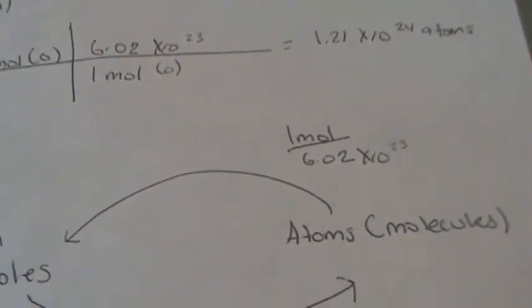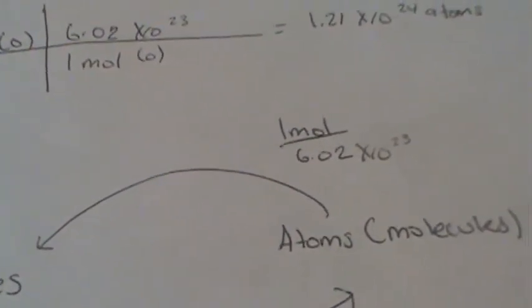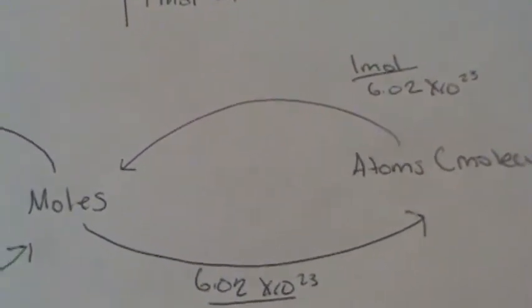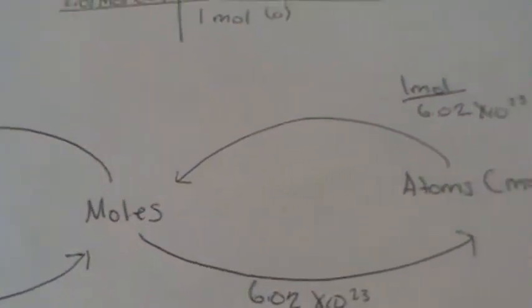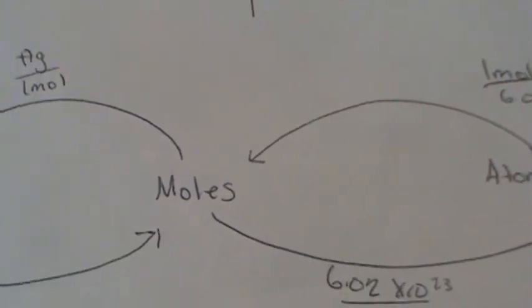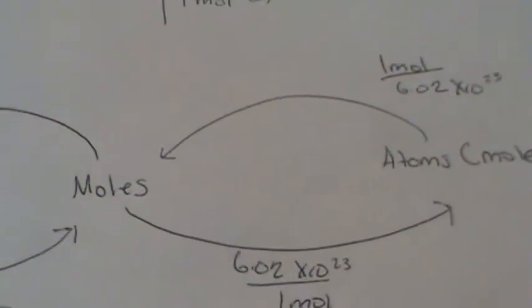And from atoms to moles, we put one mole over 6.02 times 10 to the 23rd, which is our Avogadro's number. We have to go from atoms to moles first in order to get our grams, if we want to find our answer for that.